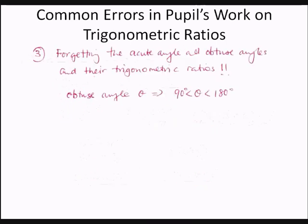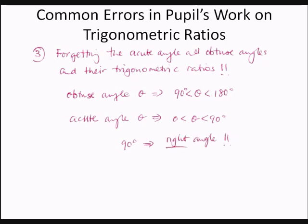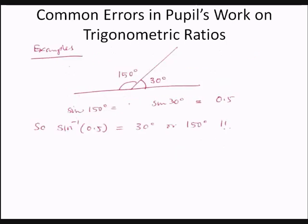The third common error is forgetting the properties of acute and obtuse angles and their trigonometric ratios. The obtuse angle is between 90 and 180 degrees; the acute angle is between 0 and 90 degrees. Note that 90 degrees is neither acute nor obtuse — it is the right angle. For example, sine 150 degrees equals sine 30 degrees, and from the calculator that is equal to 0.5.